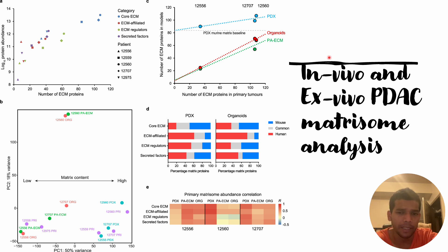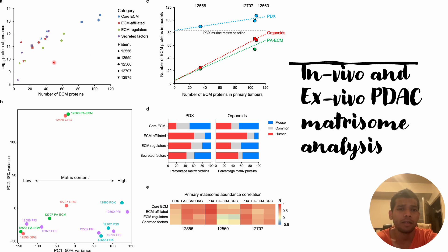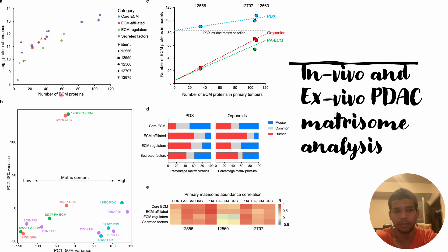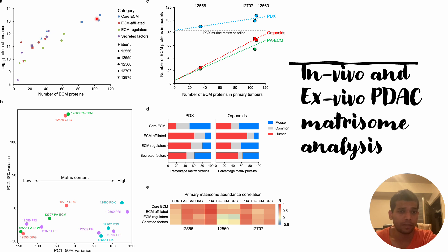After finding out the basic reasons behind the difference between in vivo and ex vivo, they also checked the relationship between high protein abundance and the number of ECM proteins found in those samples. What they found is that there is a direct correlation between the increase in the number of ECM proteins and the number of abundance proteins found in the patients. This indicates that the most abundant proteins could be the ECM proteins, and this difference is related to the time duration difference in in vivo and ex vivo PDAC formation.